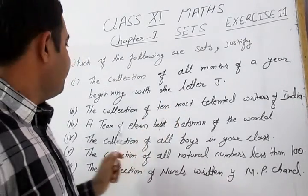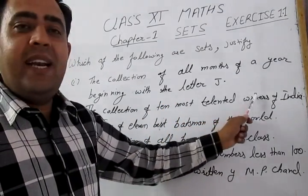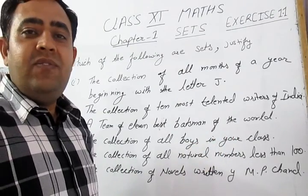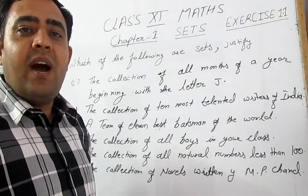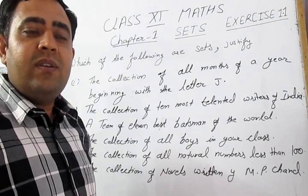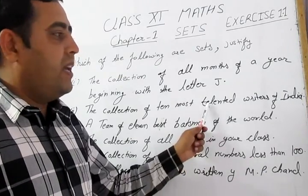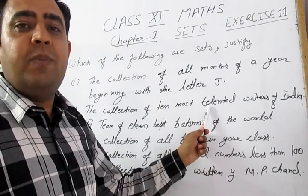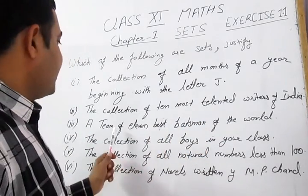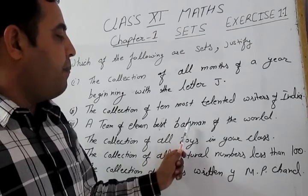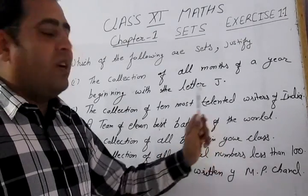Second: the collection of 10 most talented writers of India. As we know, it varies from person to person how to find the 10 most talented writers in India, so it is not possible to determine. Therefore it is not a set. Third: a team of 11 best batsmen of the world — same answer, it also varies from person to person.